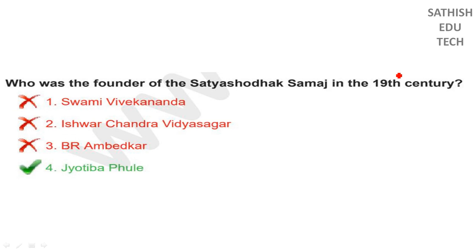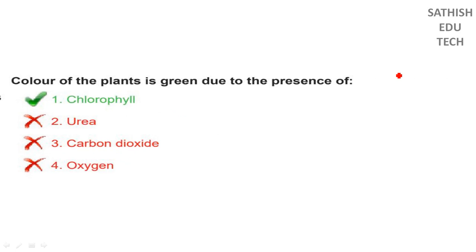In the first century, the most significant development came. The green color in plants comes from chlorophyll.